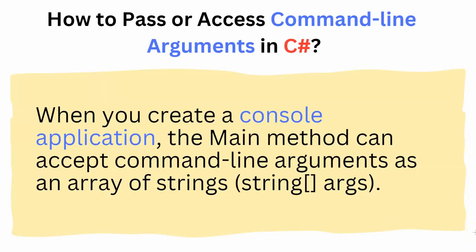How can you pass or access command line arguments in C#? You can do that in all kinds of C# applications, starting from console apps, WinForms and WPF desktop applications, web apps, and .NET MAUI applications. When you create a console application, the main method can be used to accept command line arguments as an array of strings. Let's start with a console application example and look at some other cases as well.